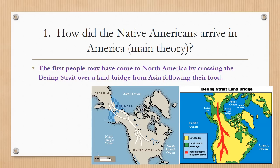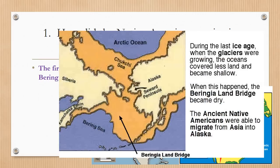Number one under other important information: how did the Native Americans arrive in America? The main theory is that the first people may have come to North America by crossing the Bering Strait over a land bridge from Asia, following their food. You can see the arrows coming from Siberia and the Russian area, crossing a land bridge. During the last ice age, when the glaciers were growing, the oceans covered less land and became shallow. When this happened, the Beringia land bridge became dry and the ancient Native Americans were able to migrate from Asia into Alaska.